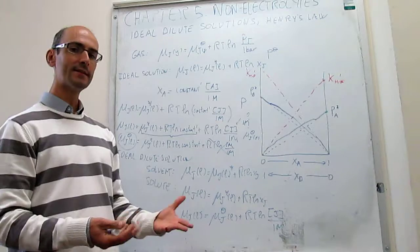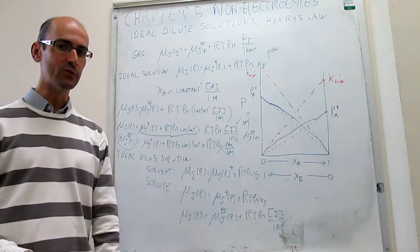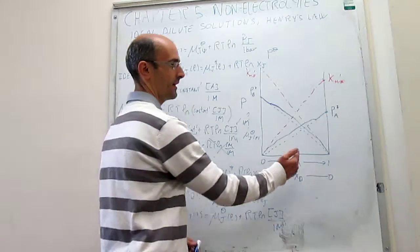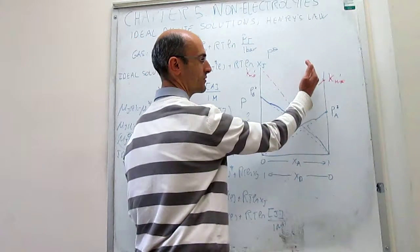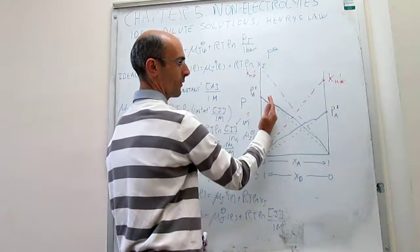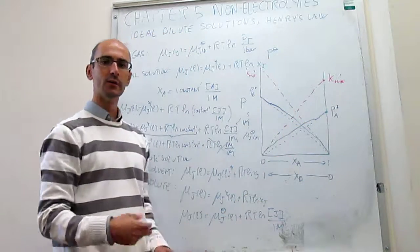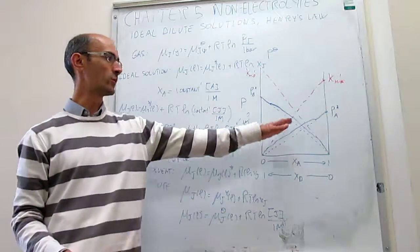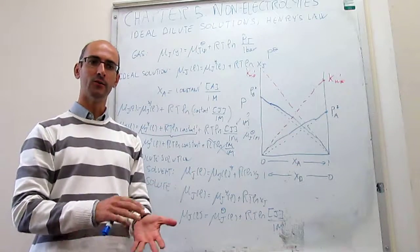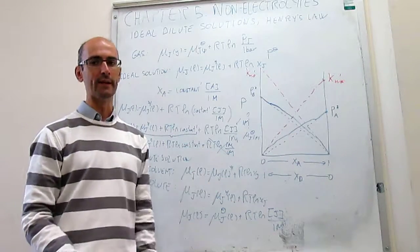The next thing we are going to do is explain what happens when you don't have any of these ideal conditions. An ideal dilute solution only applies to the extreme ends of the diagram, not in between. The question is: what do we do for situations where neither Henry's law nor Raoult's law applies, and how do we write the chemical potential in those cases?